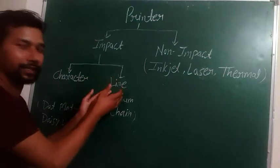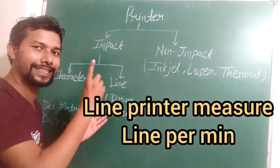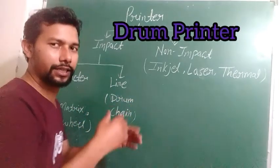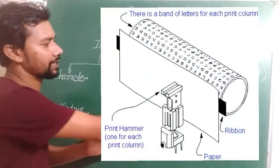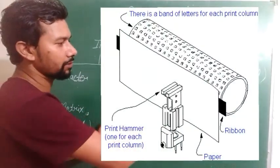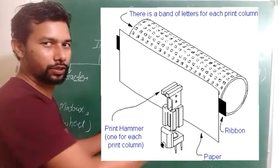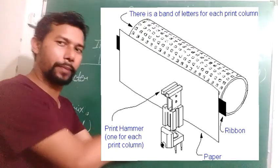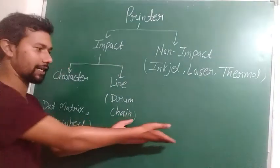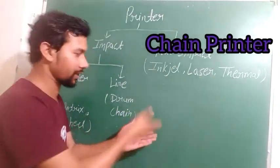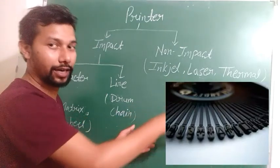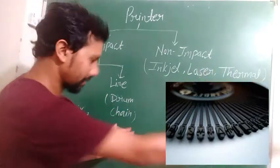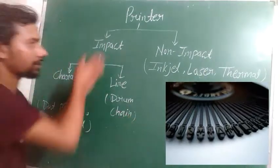Line printers print a single line at one time. One type is the drum printer — it has a drum with all alphabets and numbers printed on it; when the drum rotates, it prints on the paper. Another type is the chain printer — all numbers and alphabets are printed on a chain; the chain rotates and prints a single line, then moves to the next line.